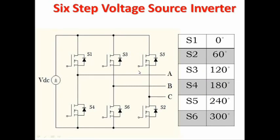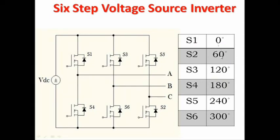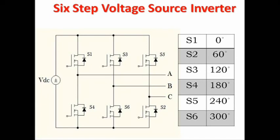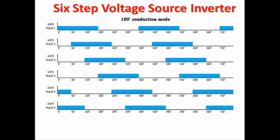The adjacent MOSFETs have a 120° phase difference. For example, S1 and S3: 0° and 120°, giving a 120° phase difference. S3 and S5: 120° and 240°, again a 120° difference. Now let us look at the gate pulse diagram. According to the pulse width of the gate pulse, the operating mode is divided into two: the 180° conduction mode and the 120° conduction mode.